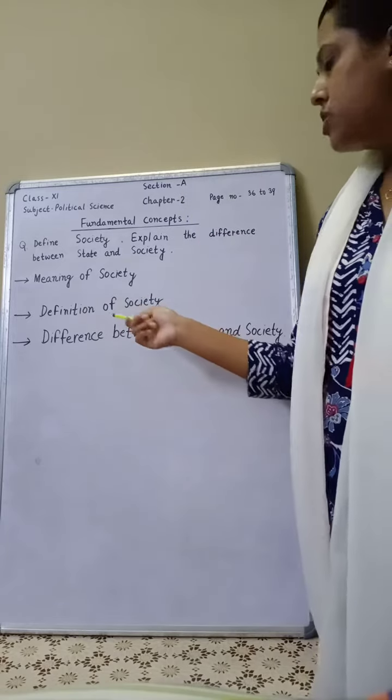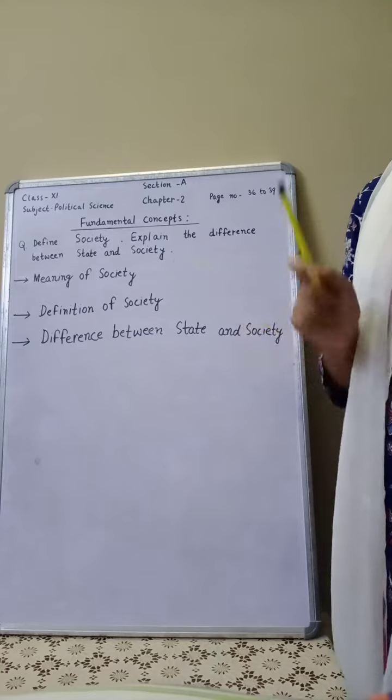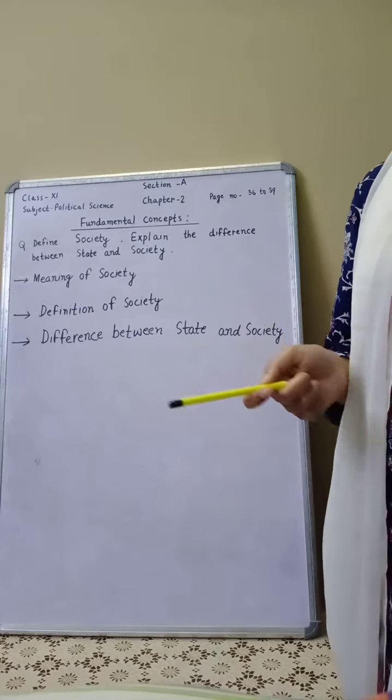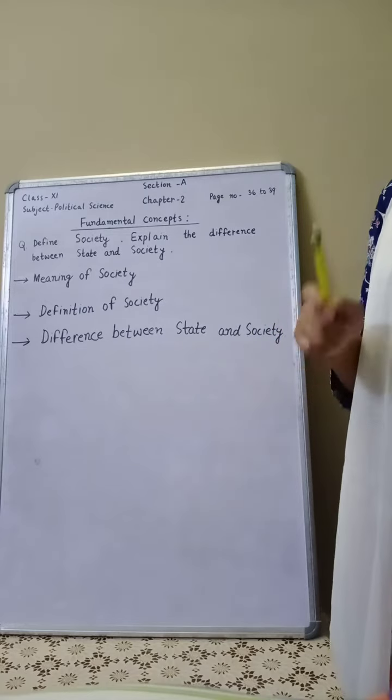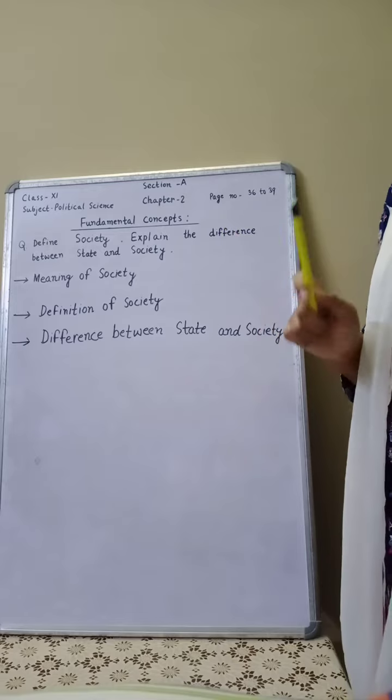Now, definition of society. According to MacIver, society includes every will relationship of man to man.